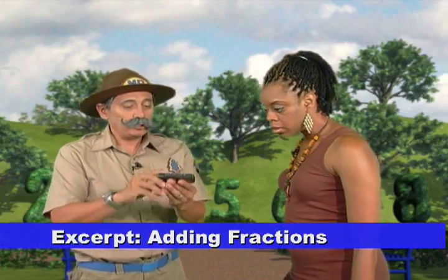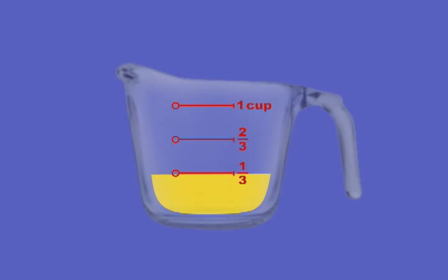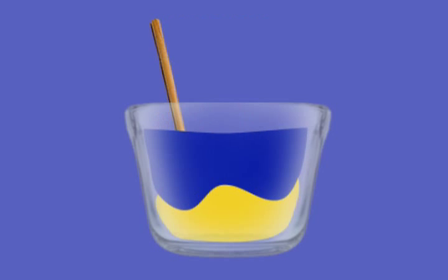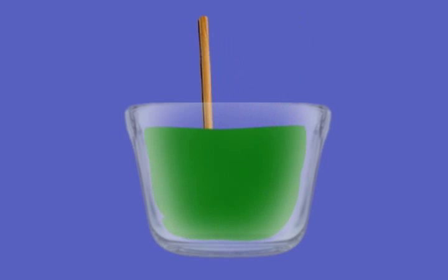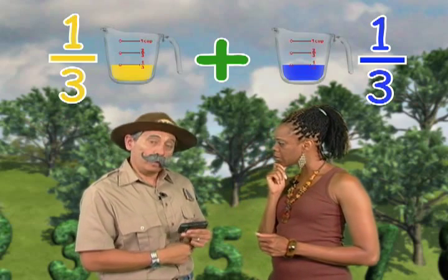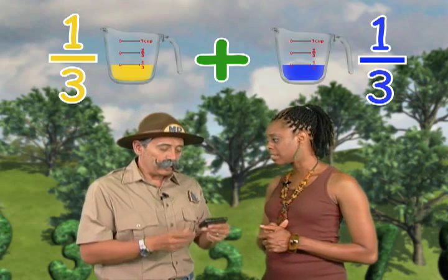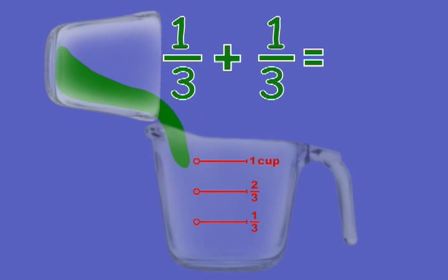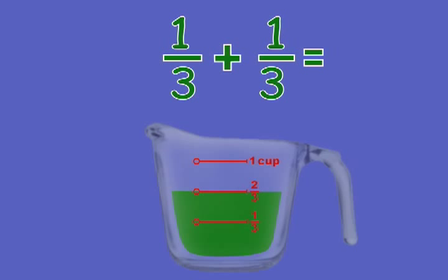I've got a little movie on my cell phone — I'll show you how to do it. First, you take one-third of a cup of yellow paint, then you pour the yellow paint into a bowl. Next, you'll need one-third of a cup of blue paint. Pour the blue paint into the bowl with the yellow paint, stir until mixed really well — and look what color you get! Green! But how much green is it? We started with one-third cup yellow paint and one-third cup blue paint, so that's one-third plus one-third. Watch what happens when we pour the green paint back into the measuring cup. The paint comes up to two-thirds. So one-third plus one-third equals two-thirds.